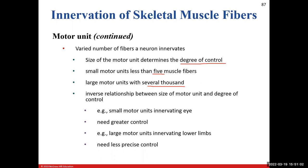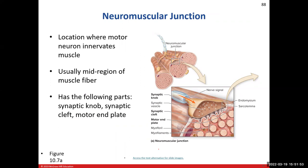There is an inverse relationship between motor unit size and degree of control. A small motor unit — one motor neuron innervating fewer than five muscle fibers — has higher control. A large motor unit innervating thousands of fibers has less control. Extrinsic eye muscles have small motor units with greater precision; quadriceps and hamstrings have large motor units with less precise control.